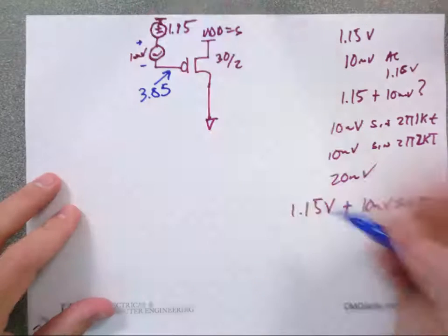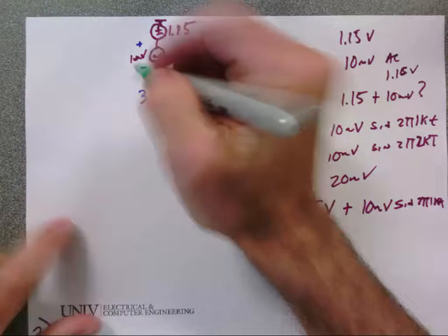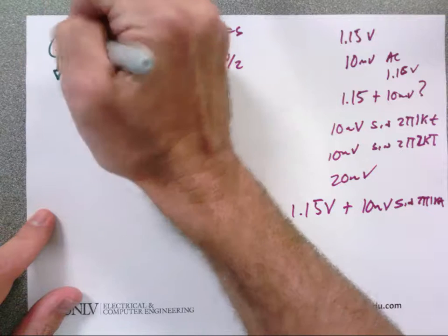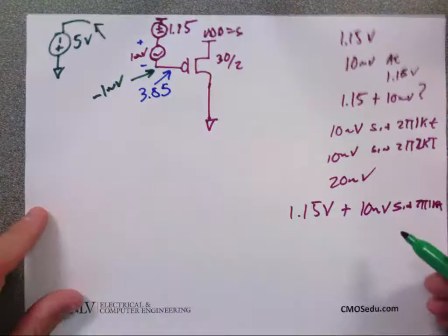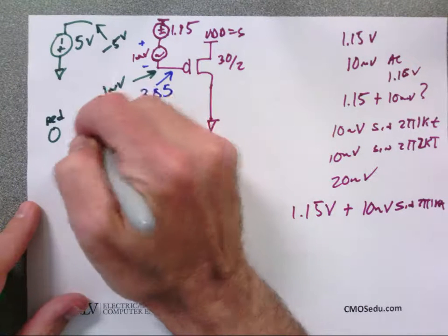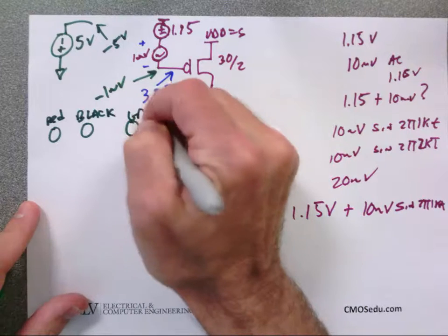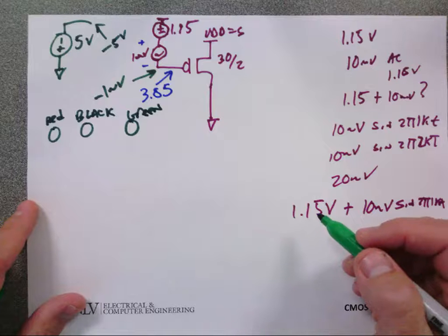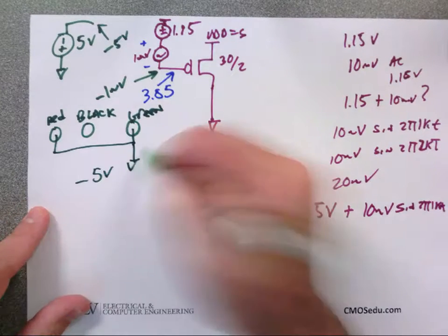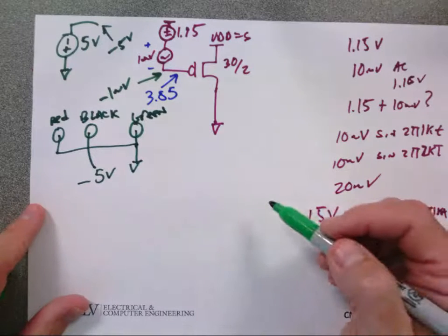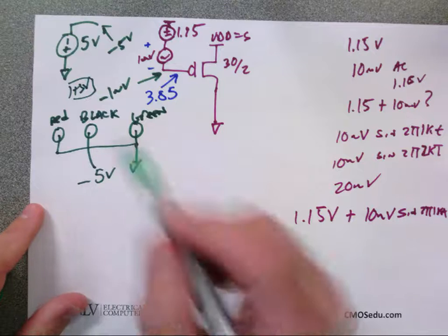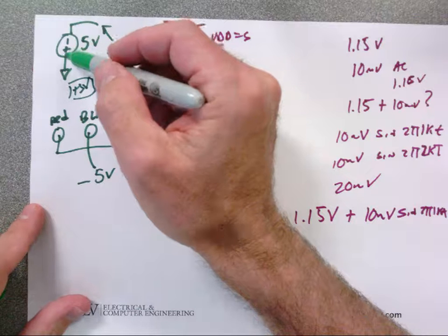If I write the AC voltage and put the polarity like this, what is the AC voltage here? Regarding a power supply with red, black, and green terminals: to get minus 5 volts, ground the red terminal, set the supply to 5 volts — the meter reads 5 V — and that node is your minus 5.